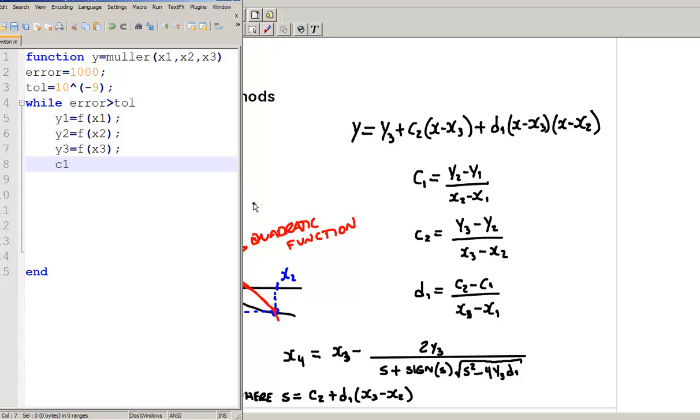Now, I can define the c's. c1 is y2 minus y1, divided by x2 minus x1, according to this. c2 equals to y3 minus y2, divided by x3 minus x2. d1 defined by c2 minus c1. Notice that I need to define c1, c2 before I define d1, so that Octave will know the value of c1 and c2 before it computes the value of d1. x3 minus x1.